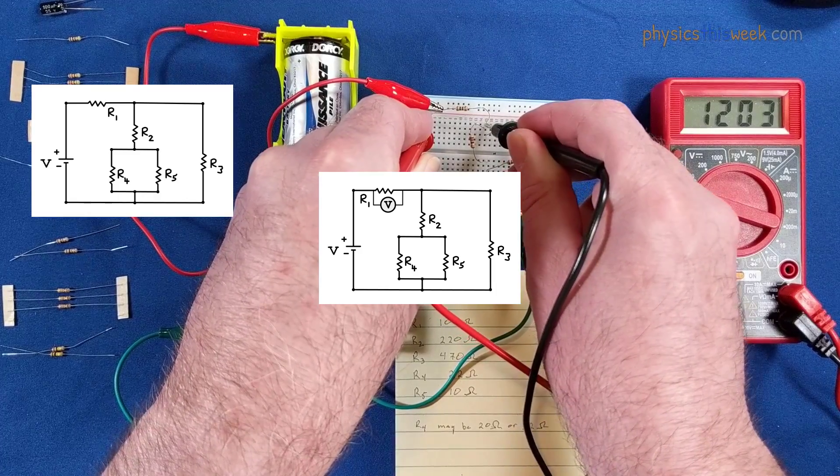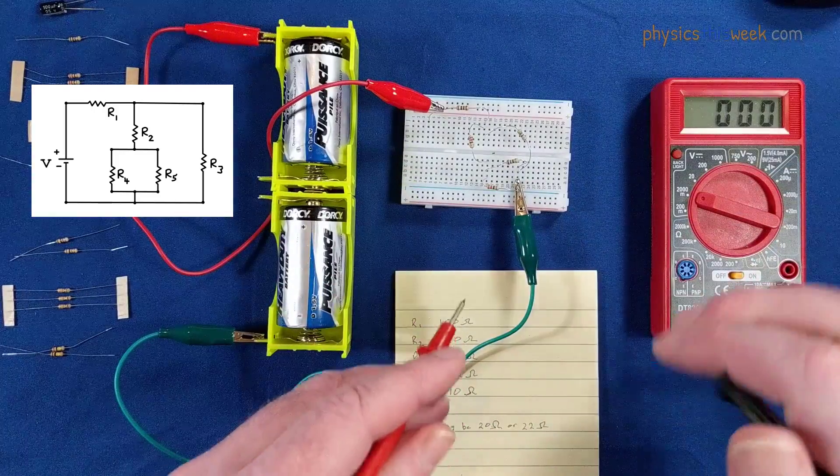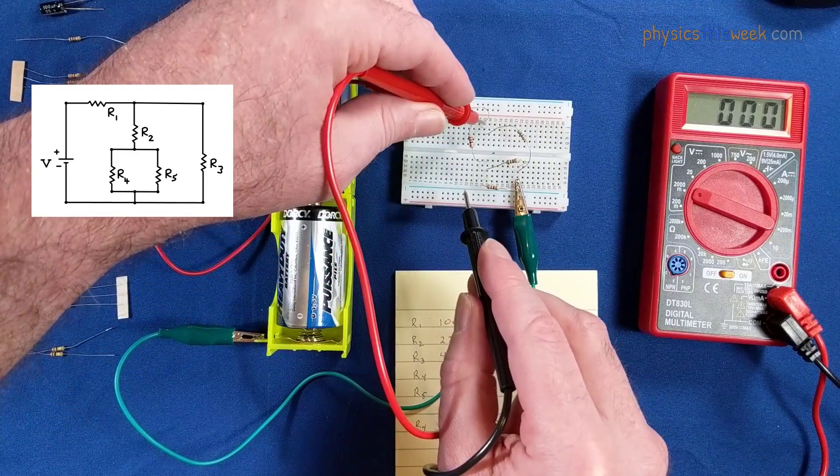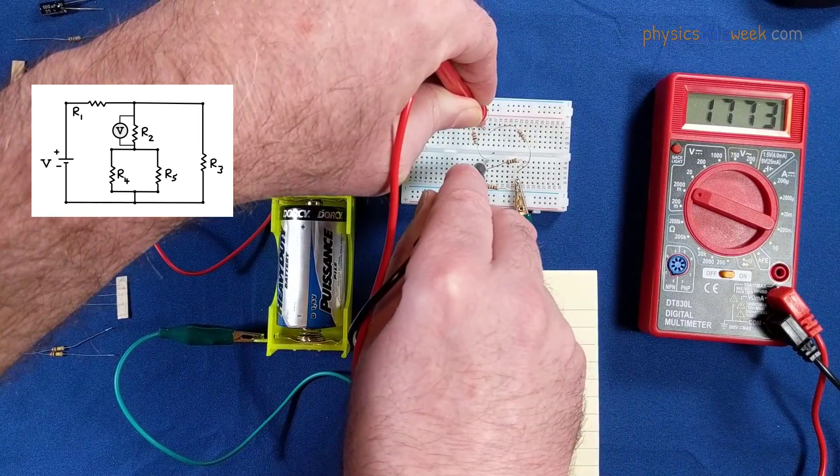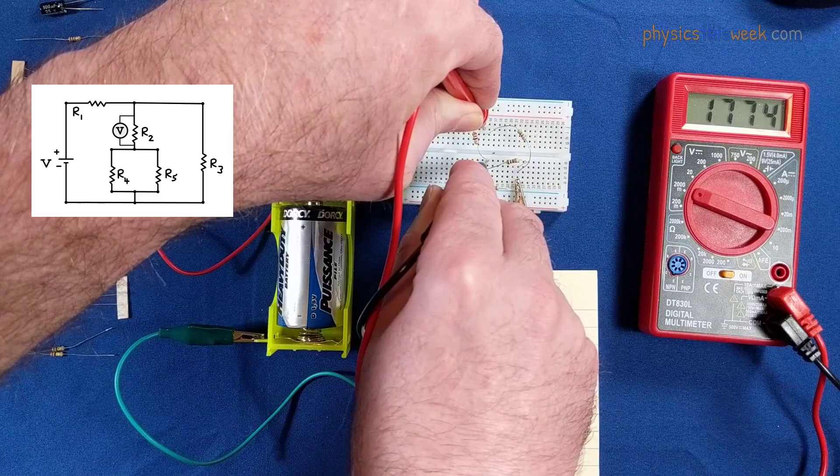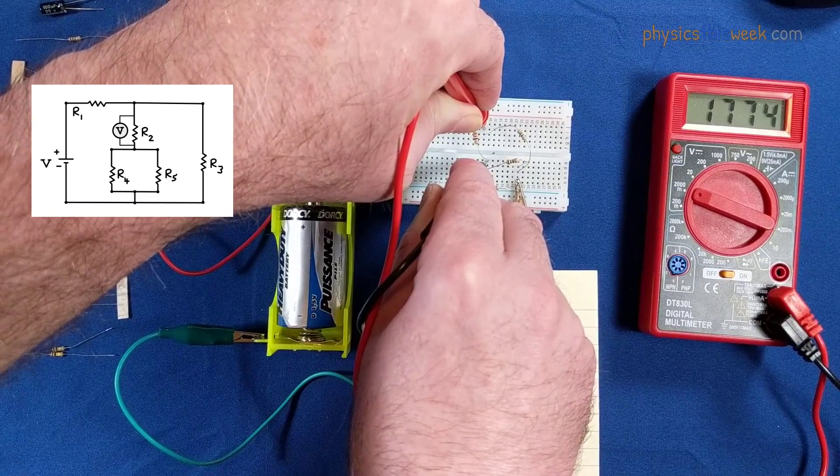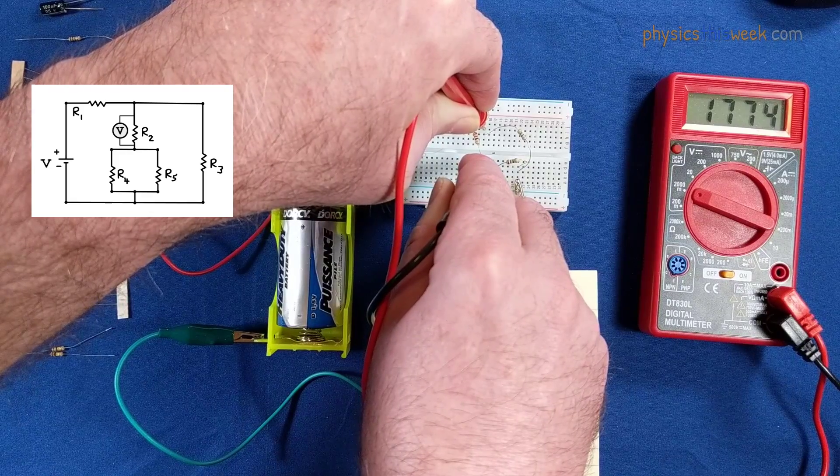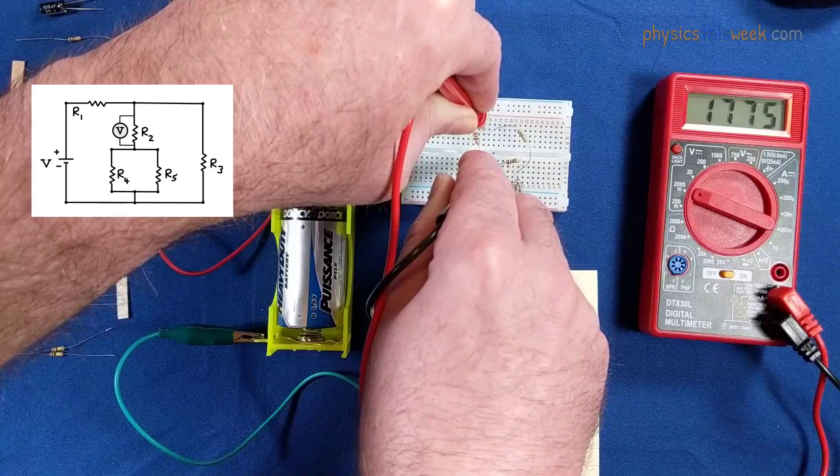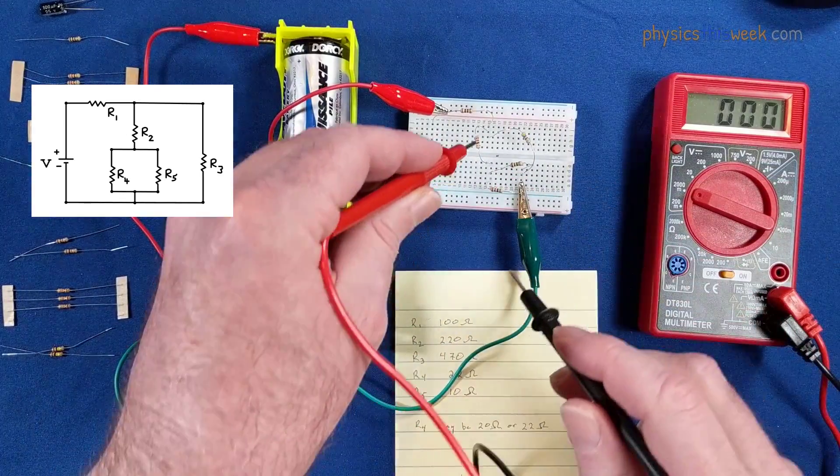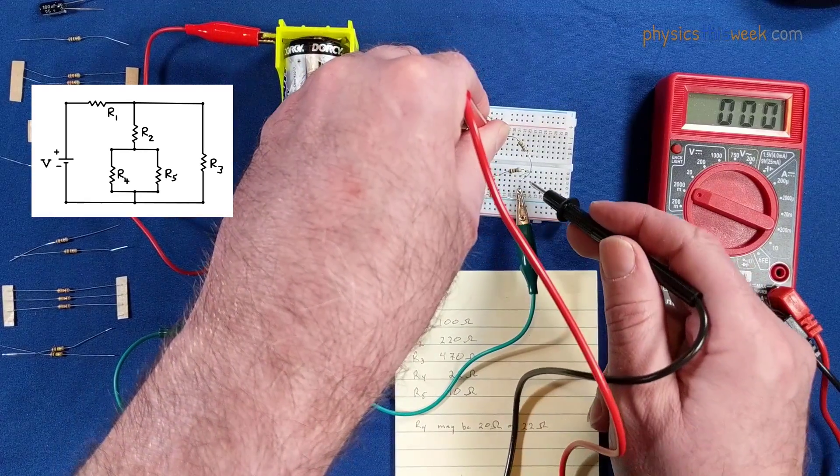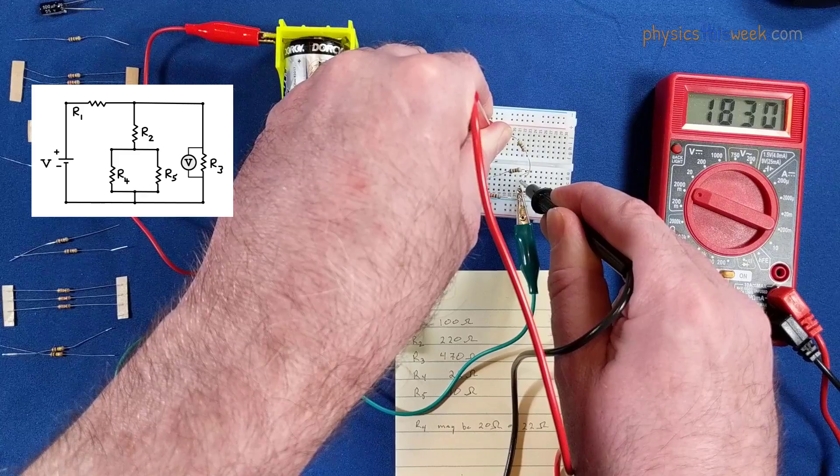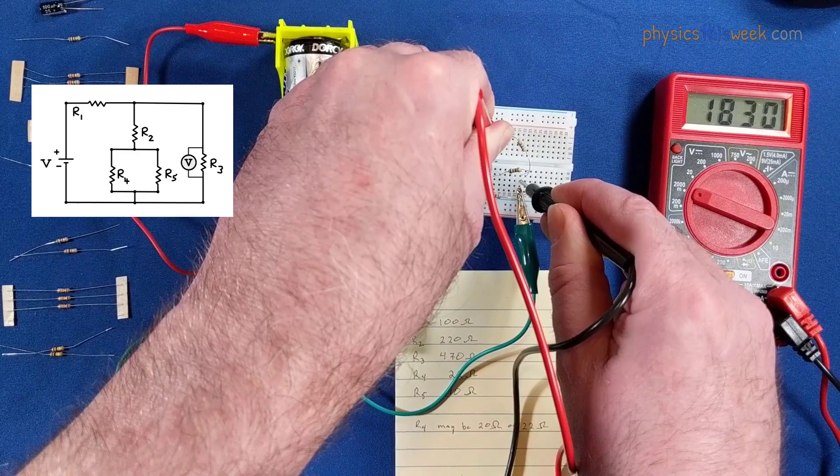Now I'm going to measure across resistor two, that is the 220 ohm red-red-brown. Looks like 1775 or four or five. You will get some flutter in that last digit. Let's put it in as four. That's for resistor two. Resistor three is the 470 ohm, looks like 1830 millivolts.